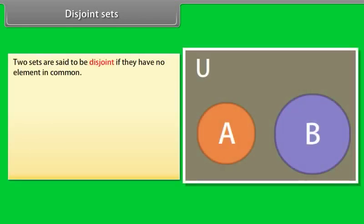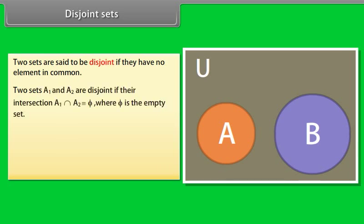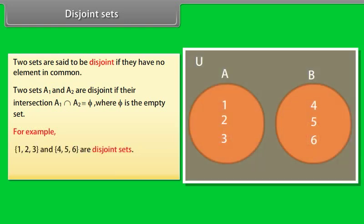Disjoint sets. Two sets are said to be disjoint if they have no element in common. We can say that two sets A1 and A2 are disjoint if their intersection is phi, where phi is the empty set. For example, {1, 2, 3} and {4, 5, 6} are disjoint sets. The sets of alive and dead people are disjoint. Disjoint sets can be represented by means of a Venn diagram as shown.